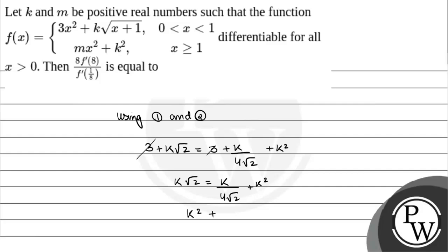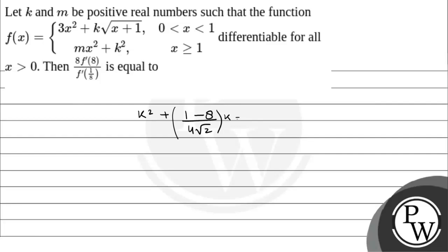Moving to the next step: k² + k(1/(4√2) - √2) = 0. This is k² + (1-8)/(4√2) k = 0. So we have k² - 7k/(4√2) = 0. k takes values 0 or 7/(4√2).